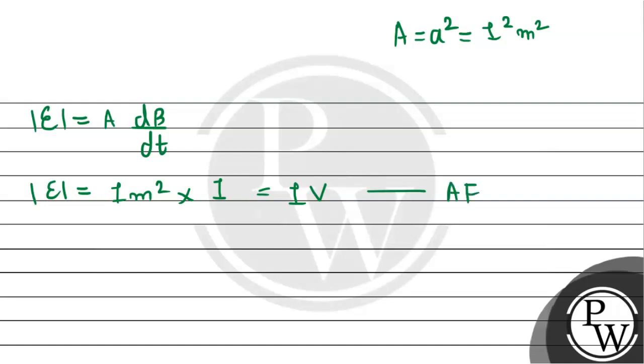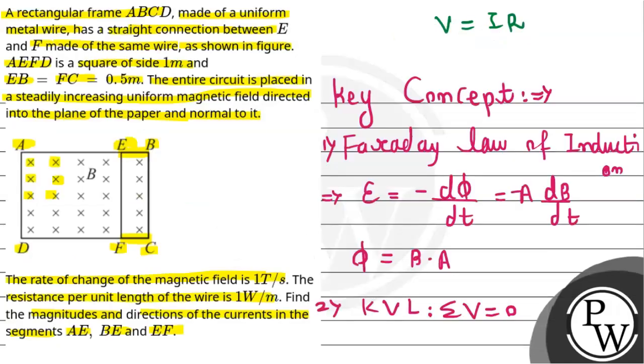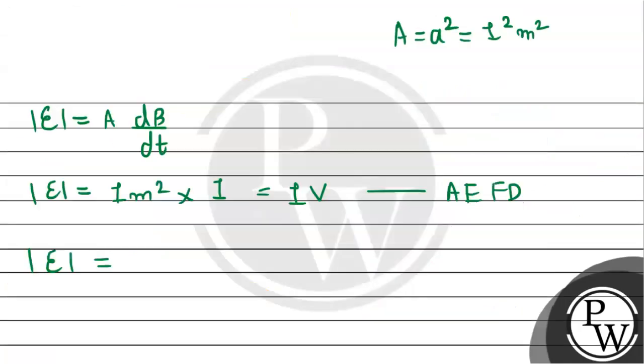For another loop, the area is 0.5 times 1, so it will come around 0.5 volt. This is for the EBCF loop.